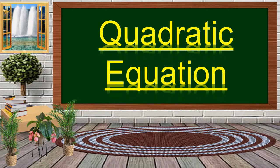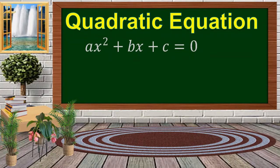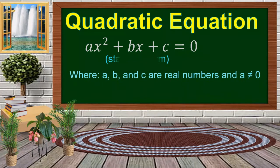Today we're going to talk about quadratic equations. A quadratic equation has the form ax squared plus bx plus c equal to 0. This is the standard form of the quadratic equation, where a, b, and c are real numbers, and a should not be equal to 0.